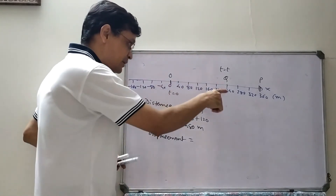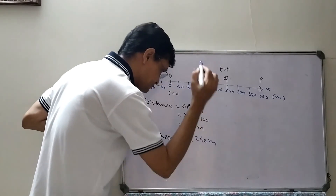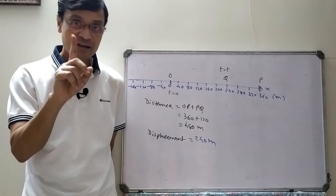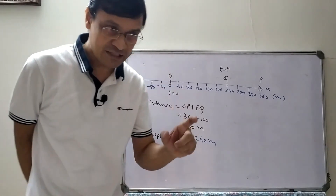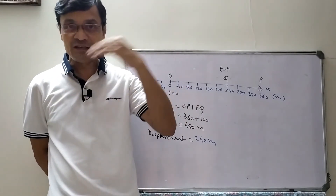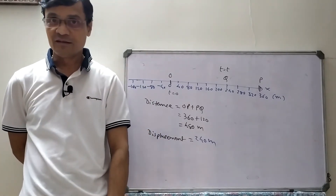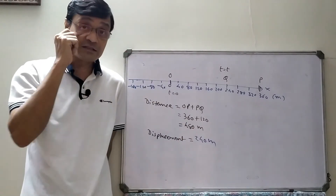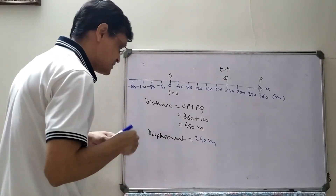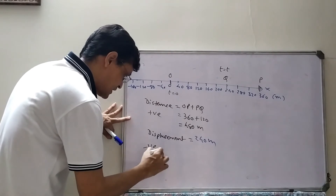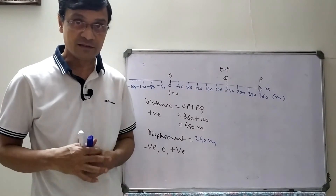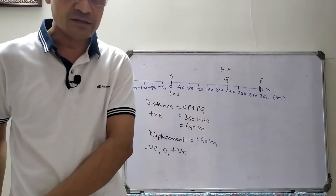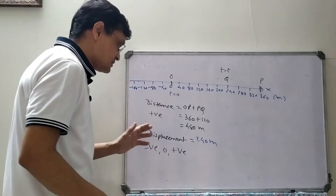Displacement is always the shortest distance between the initial and final point. Initial point is at 0, final point is at 240, so displacement = 240 meters. Distance and displacement are not equal here. Distance is always positive. Displacement can be positive, negative, or zero.